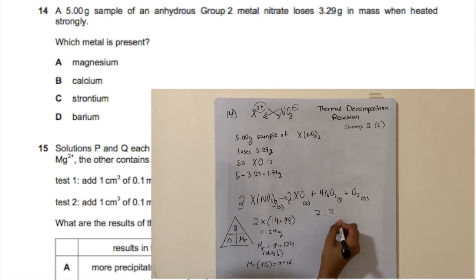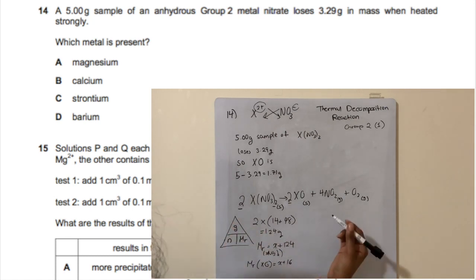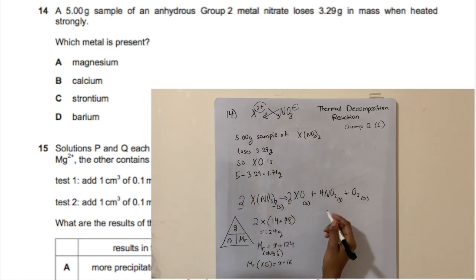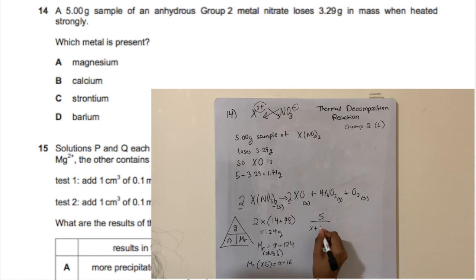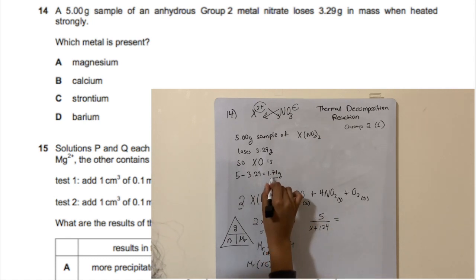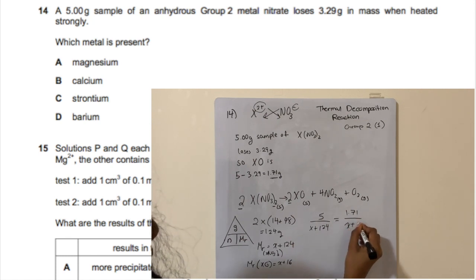Setting the mole expressions equal: 5 ÷ (x + 124) = 1.71 ÷ (x + 16). Cross-multiplying: 5(x + 16) = 1.71(x + 124), which expands to 5x + 80 = 1.71x + 212.04.